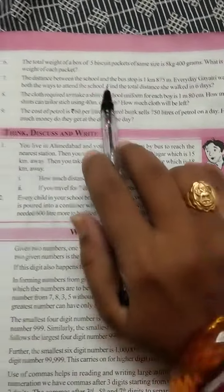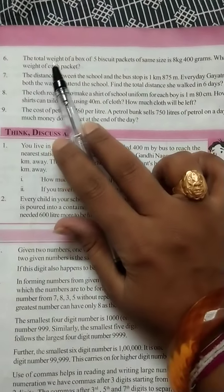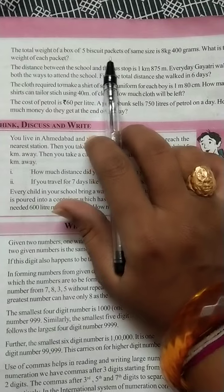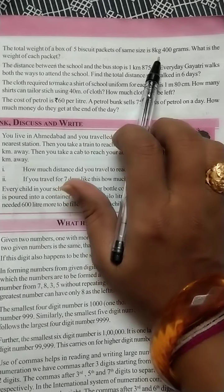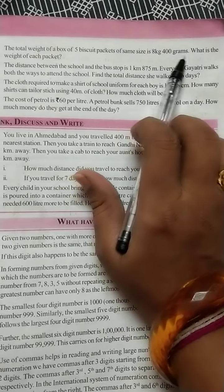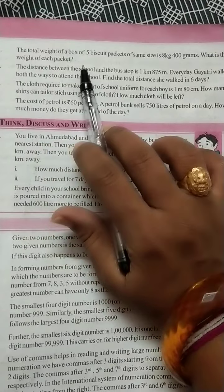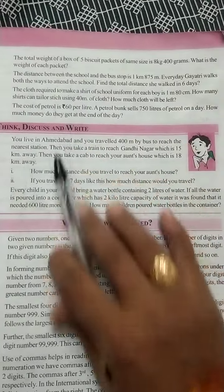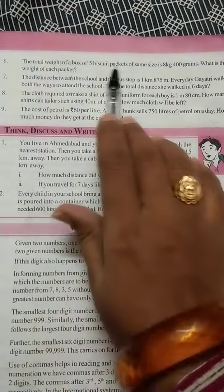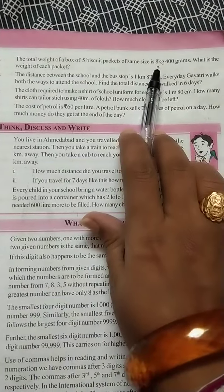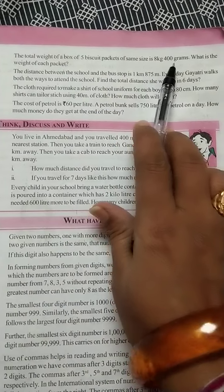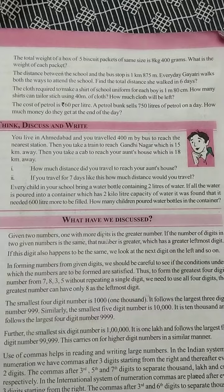Next, see here 6th question. The total weight of 5 biscuit packets of same size is 8 kg 400 grams. What is the weight of each packet?